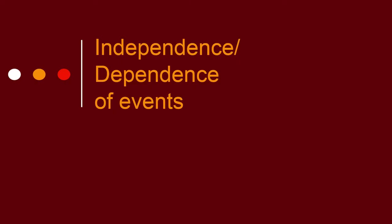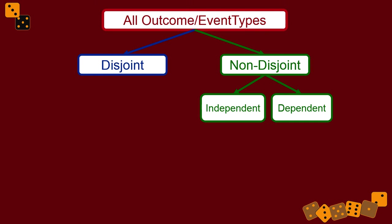Another type of event distinction we need to make is whether events or outcomes are dependent on each other or independent of each other. You can have disjoint or non-disjoint events. The concept of dependence and independence doesn't really apply to disjoint events — it applies to non-disjoint events or outcomes. Non-disjoint events, things that could potentially happen in the same frame of reference, can be either independent or dependent.